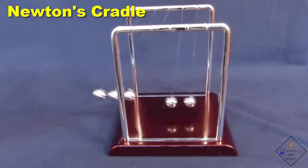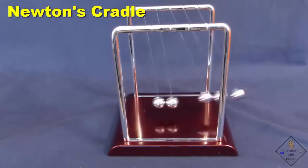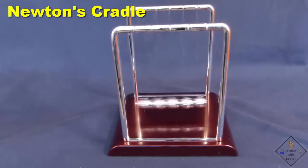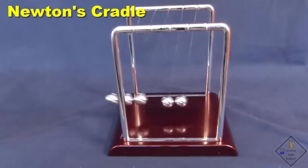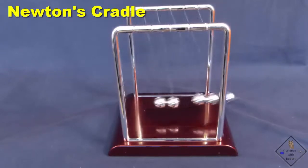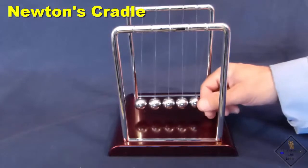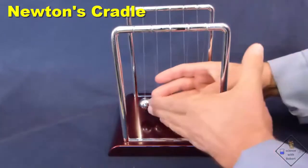The momentum of an object is a combination of its mass and speed. The total momentum does not change before and after an elastic collision. An elastic collision is a collision with no loss in energy.